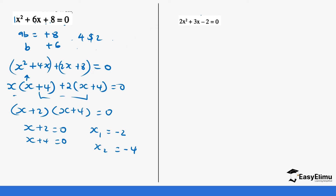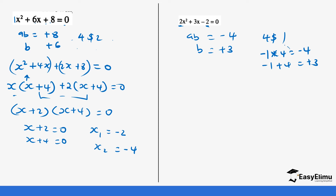Now let's do 2x squared plus 3x minus 2. This looks like where the coefficient of x squared is greater than 1. Our AB is going to be 2 times negative 2, which gives us negative 4. And our sum is positive 3. We need two values such that if you multiply them you get negative 4, and if you add them you get positive 3. These numbers are negative 1 and 4 — negative 1 times 4 gives negative 4, and negative 1 plus 4 gives positive 3. Always be careful with the negatives.